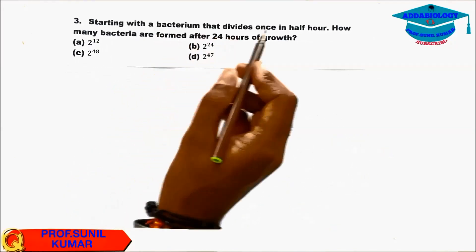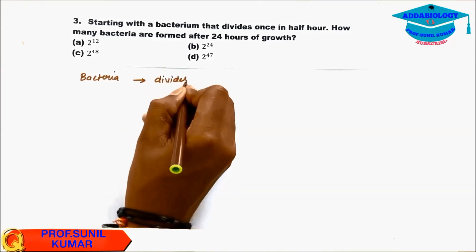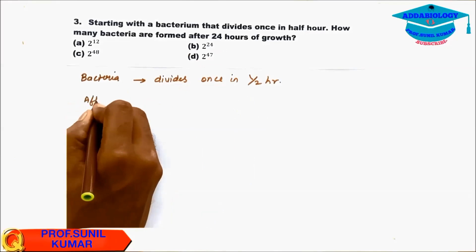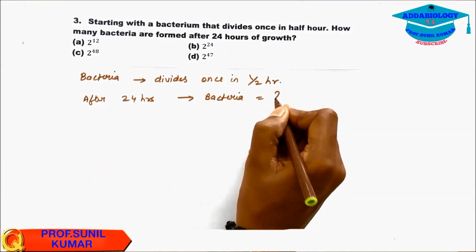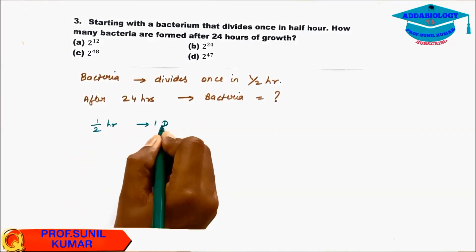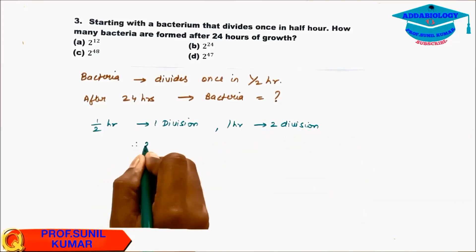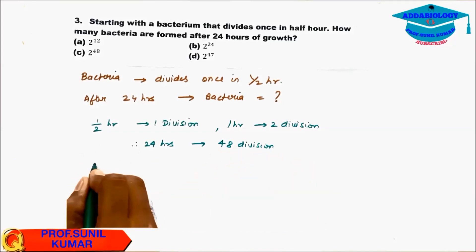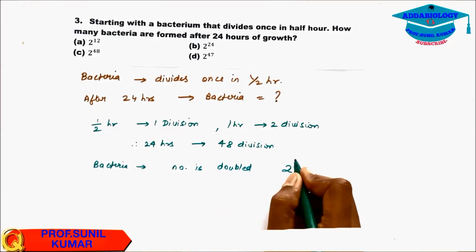Question 3: Starting with a bacterium that divides once every half hour, after 24 hours how many bacteria are there? In half an hour there is 1 division, so in 1 hour there are 2 divisions. Therefore 24 hours corresponds to 48 divisions. The answer is 2^48.